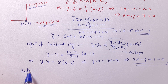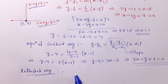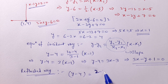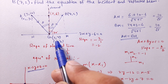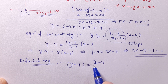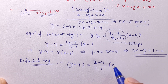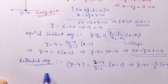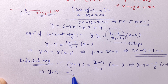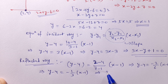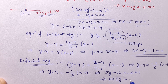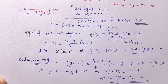Now for the reflected ray, using the same formula with points G(1,4) and B(7,2): y - 4 = [(2-4)/(7-1)](x-1) = (-2/6)(x-1) = (-1/3)(x-1). Cross multiplying: 3y - 12 = -x + 1, so x + 3y - 13 = 0. This is your equation of the reflected ray.